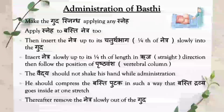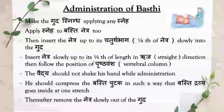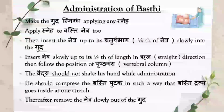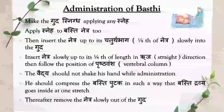Administration of Bhasti: As the picture indicates how administration is done — first, make the Guda Snigda by applying Sneha. Then apply Sneha to the Bhasti Netra to avoid injuries to the anal canal walls. Insert the Netra up to its Chaturthabhaga — one fourth of the Netra — slowly into the Guda in the Ruja (straight) direction, following the position of Prushtavamsha (vertebral column). The Vaidya should not shake his hand while administering; compress the Bhasti Putaka so the Bhasti Dravya goes inside the Guda in a single stretch. Thereafter, remove the Netra slowly out of the Guda.